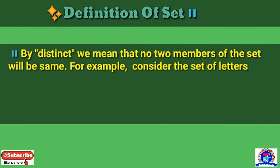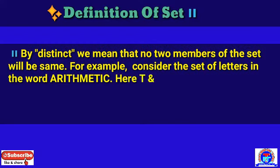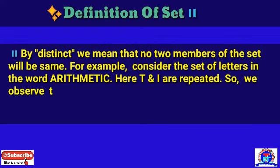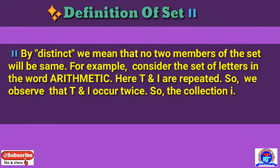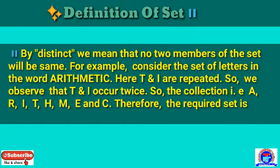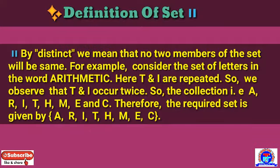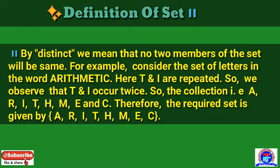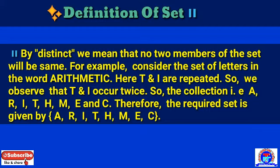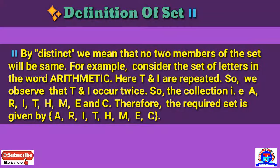By distinct, we mean that no two members of the set will be the same. For example, consider the set of letters in the word ARITHMETIC. Here T and I are repeated. So we observe that T and I occur twice. The collection is: A, R, I, T, H, M, E, T, I, C — therefore the required set is given by {A, R, I, T, H, M, E, C}.